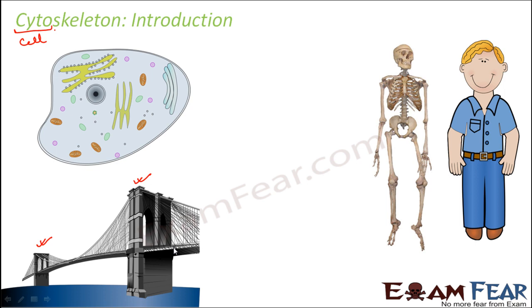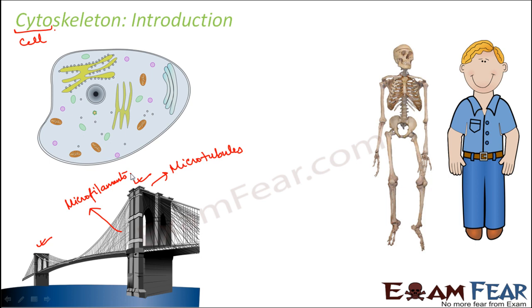In the cytoskeleton, these pillars are like the microtubules — they give the basic support and provide compressional support. The structures constructed laterally, which give additional or tensional support, are the microfilaments. So microtubules and microfilaments together form the cytoskeleton structure of a cell. We will now look at the structure of a microtubule and a microfilament in detail.